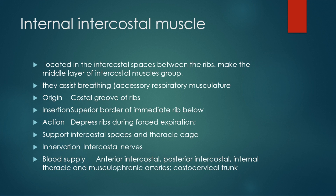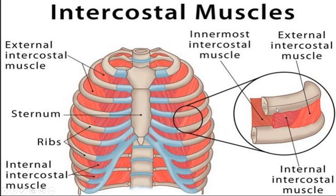Now come to the internal intercostal muscles. They are located between the external intercostal muscles and the innermost intercostal muscles. They run in the opposite direction of the external intercostal muscles — they fill up the spaces left by the external intercostal muscles. Their origin is the costal groove of the rib and their insertion is the superior border of the rib immediately below.